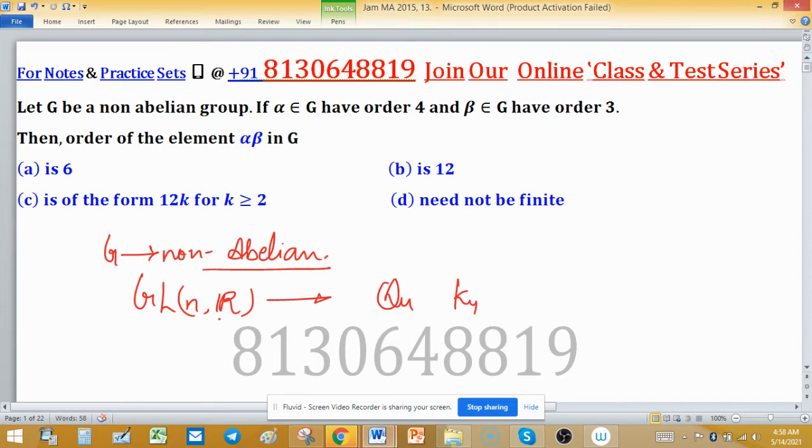You can consider S_n also, the symmetric group of n symbols. This is also non-abelian. These are a few examples to think about for non-abelian groups. You can restrict this to symmetric group over 4 symbols. S4 is a non-abelian group.